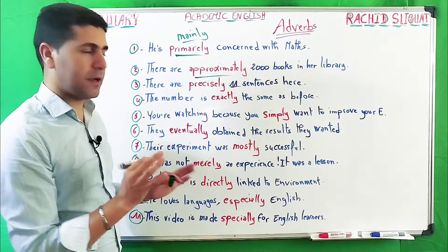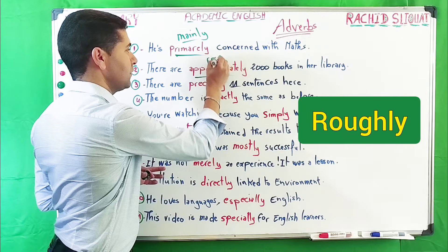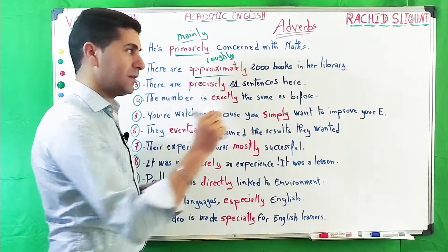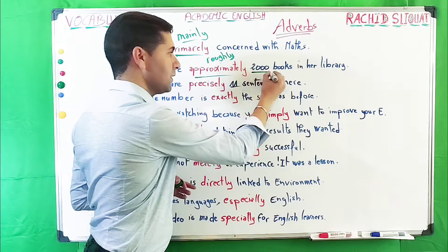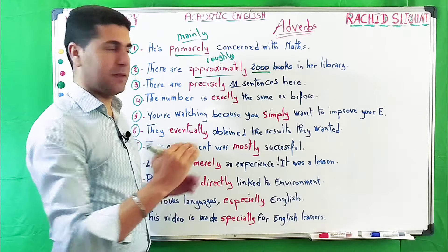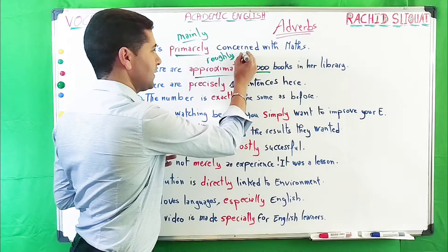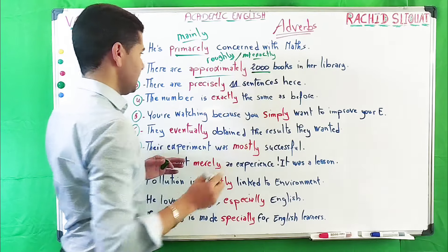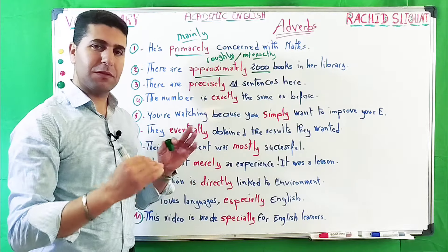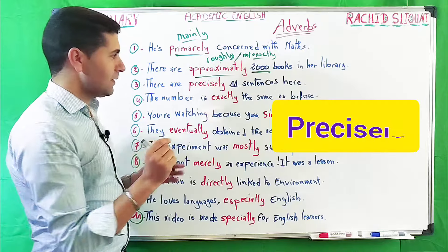We can say 'approximately' or similarly 'roughly' — it is not exact. So this number is not the exact number; it is approximately — maybe more, maybe less. That is what 'approximately' means: not exactly. There are approximately 2,000 books in her library, which means maybe more, maybe less.